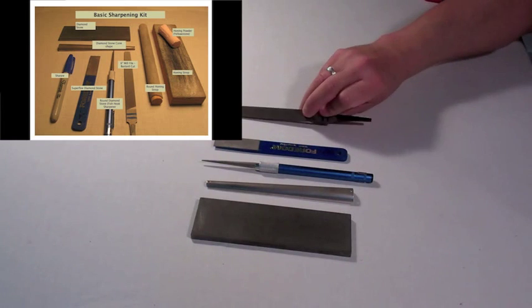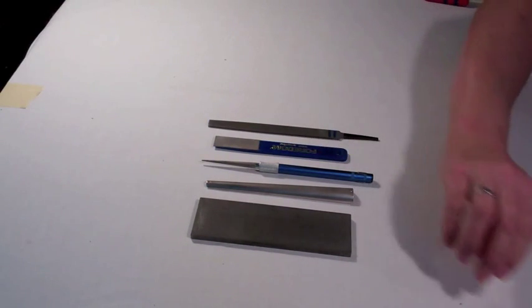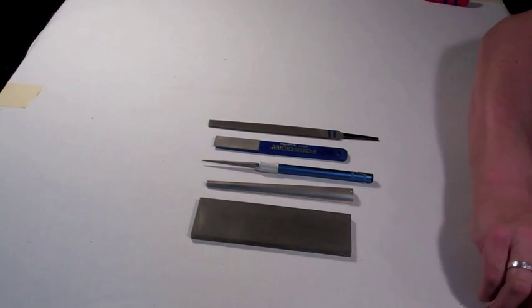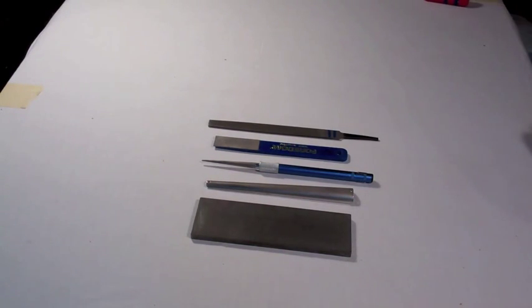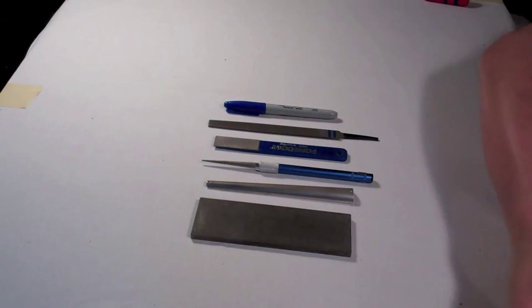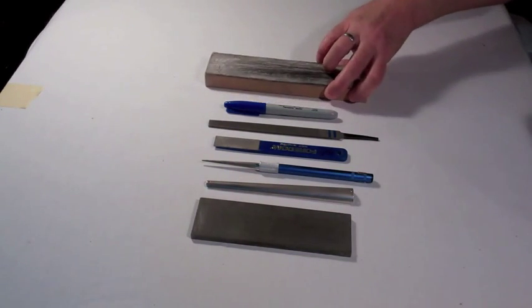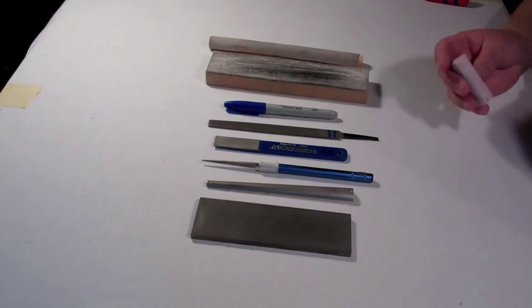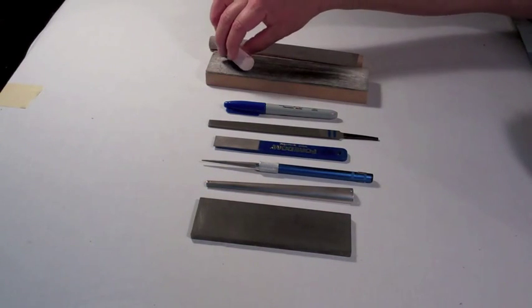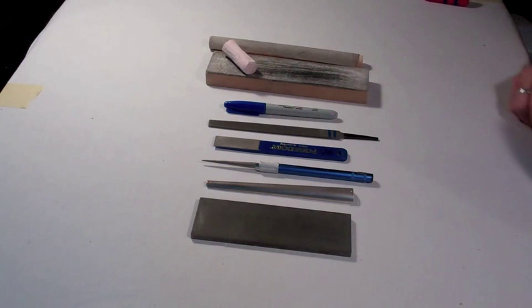Then a super fine, this is probably around 1200 grit diamond stone. Other elements of my kit are a file for getting out the larger nicks, a sharpie to help you determine where you've been, and then the final portion is the two honing straps with a little honing powder. In this case this is Yellowstone and it's a lovely pink color.